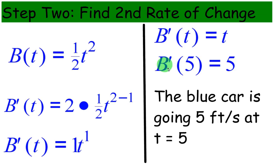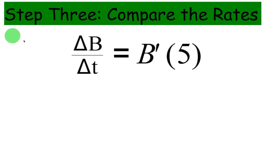And when we find the instantaneous rate of change at 5, guess what? We get exactly the same thing. We get 5 feet per second at t equals 5. So guess what? Its average rate of change is equal to its instantaneous rate of change at t equals 5.